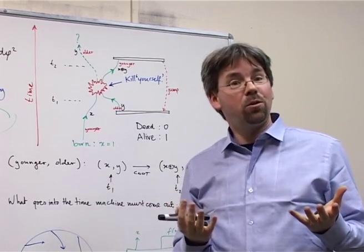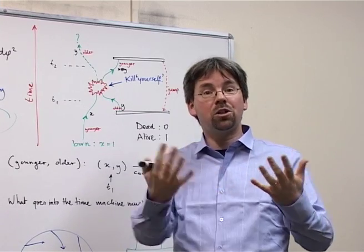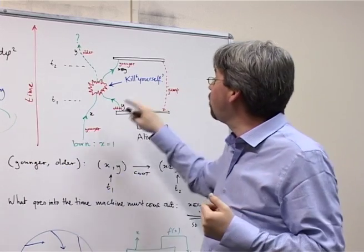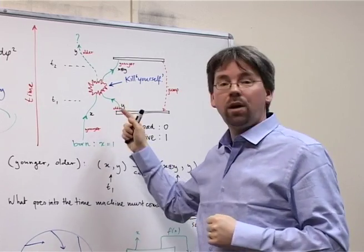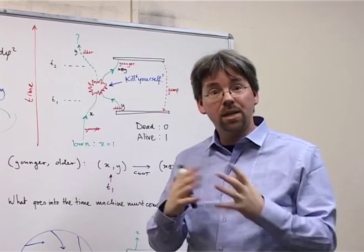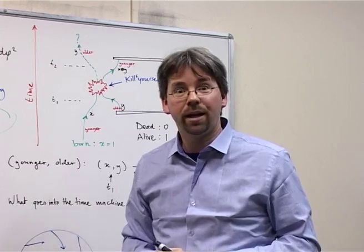Well, for that, you could go to the many worlds interpretation. In which different branches of the superposition are actually different universes. And what happens when you go back in time and you kill your older self, you actually jump from one universe to another. And this is how quantum mechanics solves time travel. Oh, I need to go to my lecture.